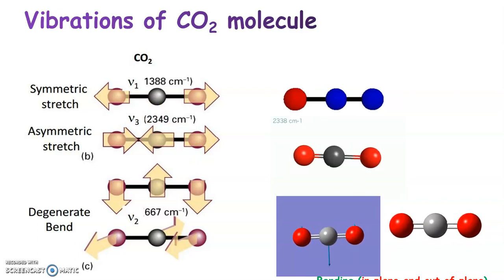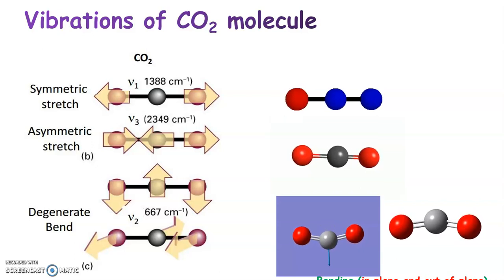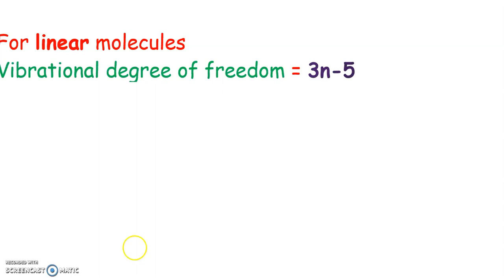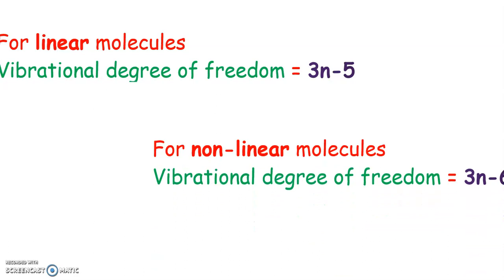From these two examples, we can derive a general equation to find the vibrational degrees of freedom of a molecule. For a linear molecule like CO₂ or NO₂, the vibrational degree of freedom is 3n-5, where n is the total number of atoms — accounting for 3 translational and 2 rotational degrees of freedom. For a non-linear molecule like water, the vibrational degrees of freedom are 3n-6.